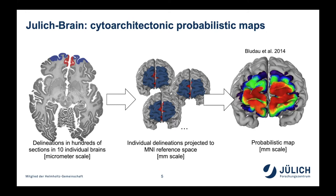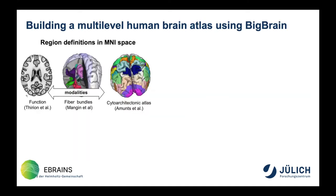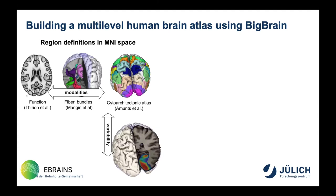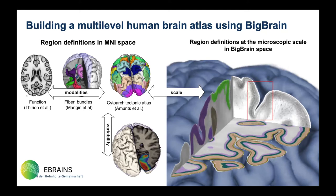In the HBP and the European Human Brain Project, we want to build a multi-level atlas that has cytoarchitectonic areas as a basis, integrating other modalities like fiber architecture or functional parcellations, and capturing variability in probabilistic maps. We want to extend this across scales using the BigBrain model and combine it with full microscopic scale in 3D, where we can see individual cortical layers and individual cells.